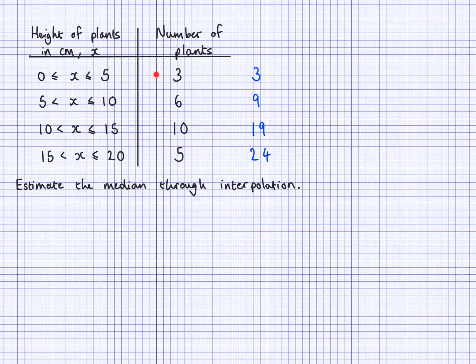So 24 is how many plants we're looking at. So 24 divided by 2 will tell me which position I'm looking at. So 24 divided by 2, let's do that. That gives me 12. So it's the 12th position that I'm interested in.